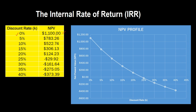Since NPV is positive, you want to drop it further, so try a discount rate of 5%. As you increase the discount rate, the NPV keeps dropping — with 10%, 15%, 20%. Notice what happens right around here: when you use a discount rate of 20%, NPV is still positive, but as soon as you use 25%, the NPV becomes negative.